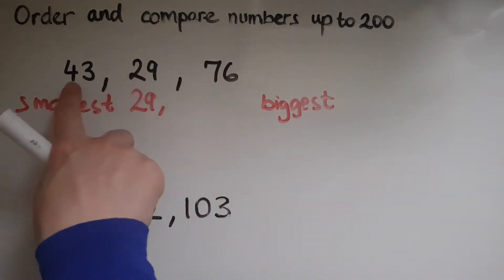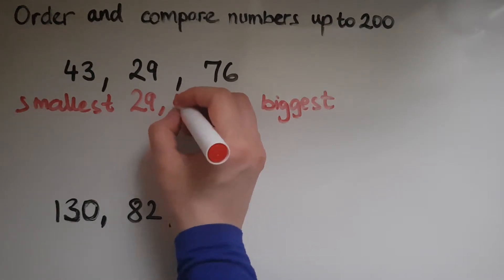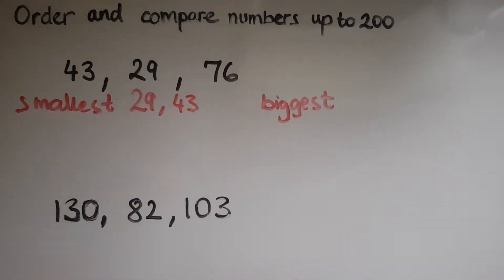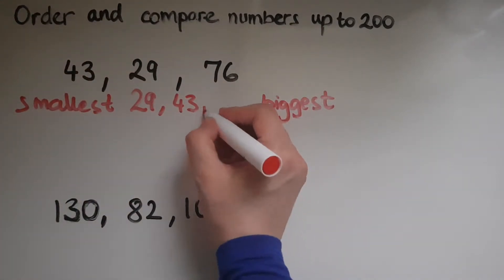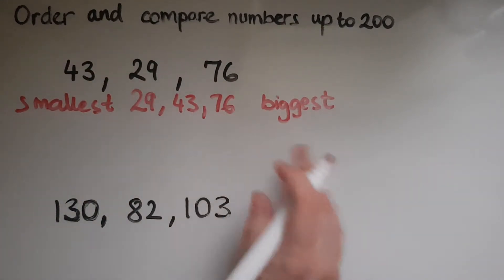Then the next biggest one would be 43, because it has more tens than 29, but fewer than 76. So 76 would come last, because it's the biggest.